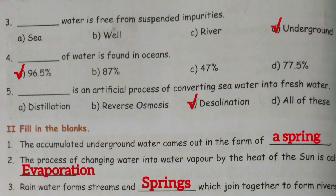Fourth one: dash of water is found in oceans. Answer: option A, 96.5%.